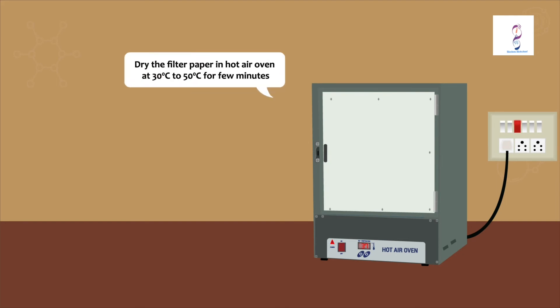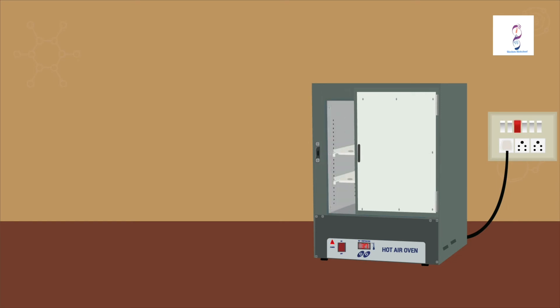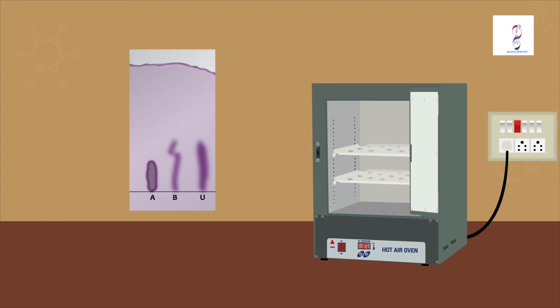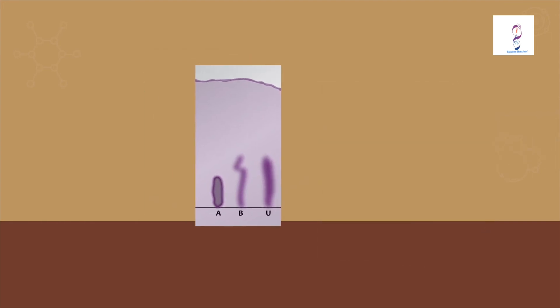After applying ninhydrin, place it in a hot air oven for a few minutes. You can see the differential migration of different amino acids on the Whatman filter paper.